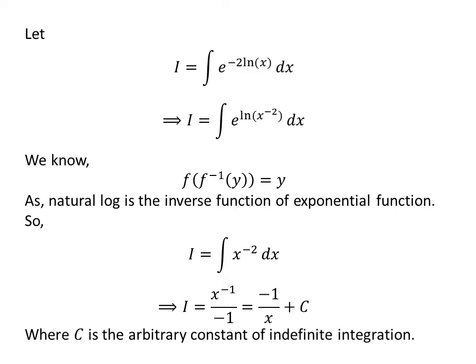This is a simple integration. As integration of x to the power minus 2 is x to the power minus 2 plus 1 upon minus 2 plus 1, so I is equal to x to the power minus 1 upon minus 1. Further simplification gives us I is equal to minus 1 upon x plus capital C.